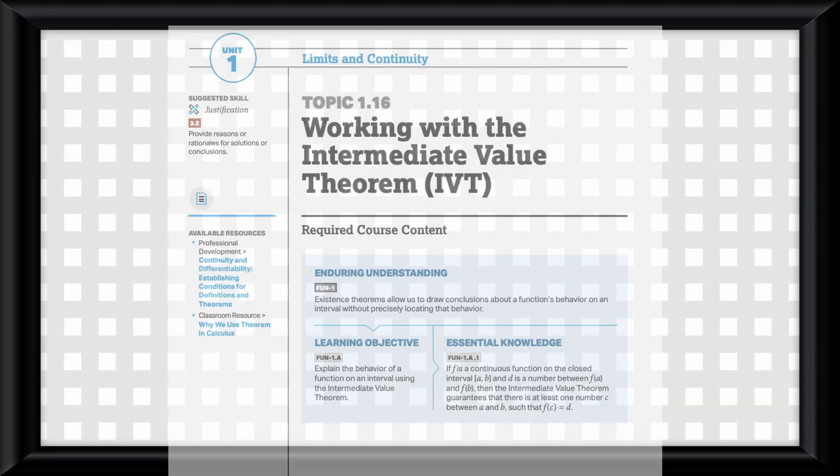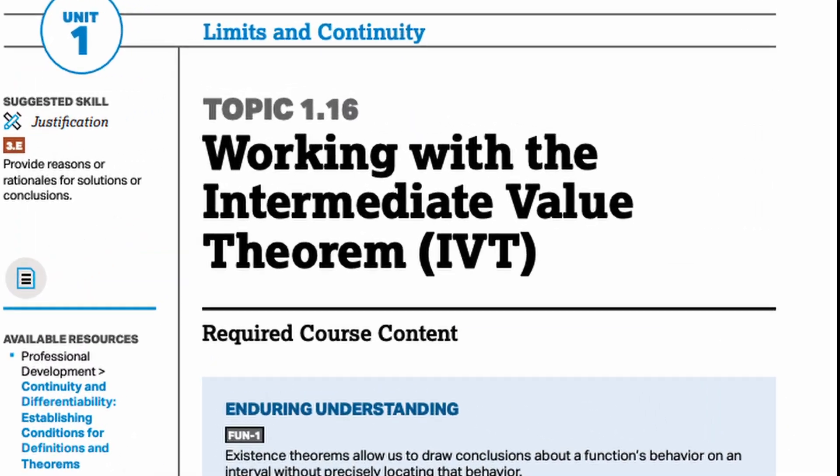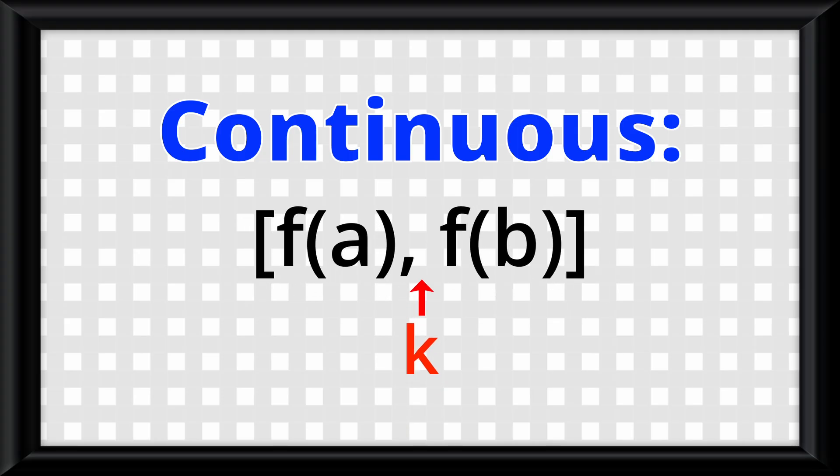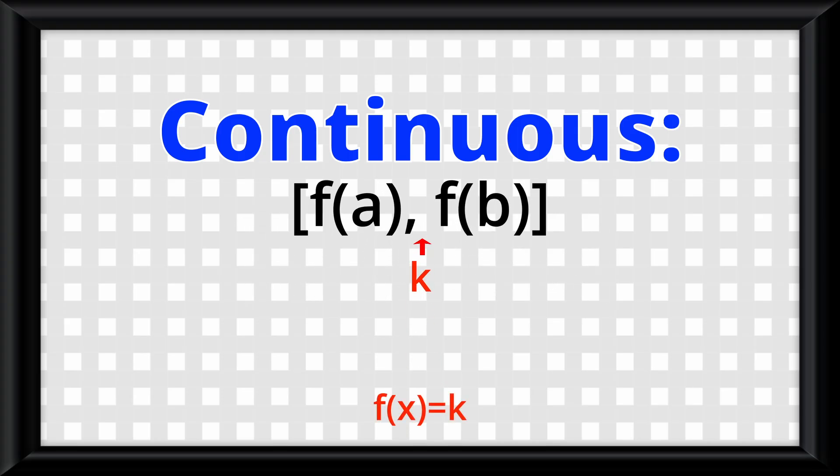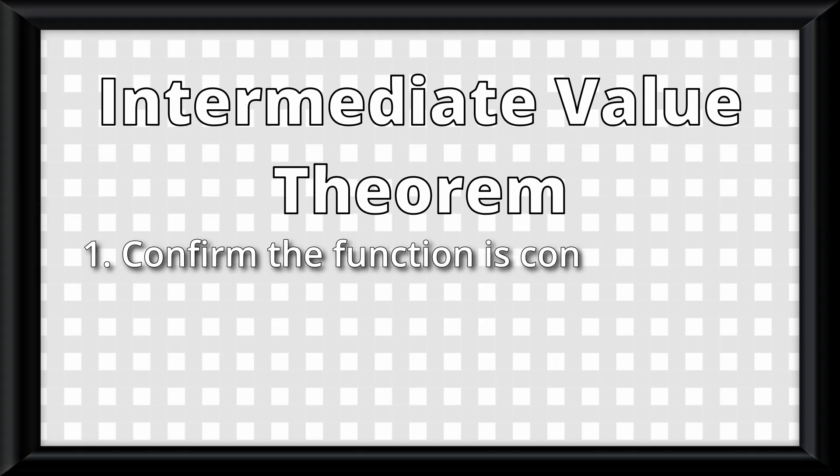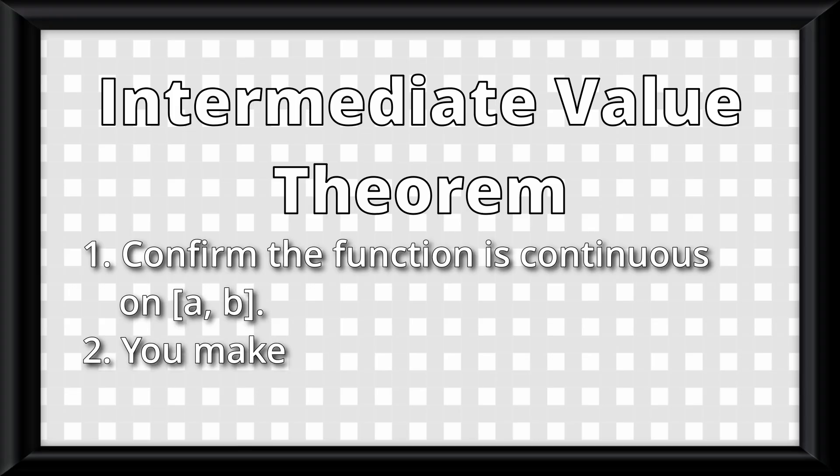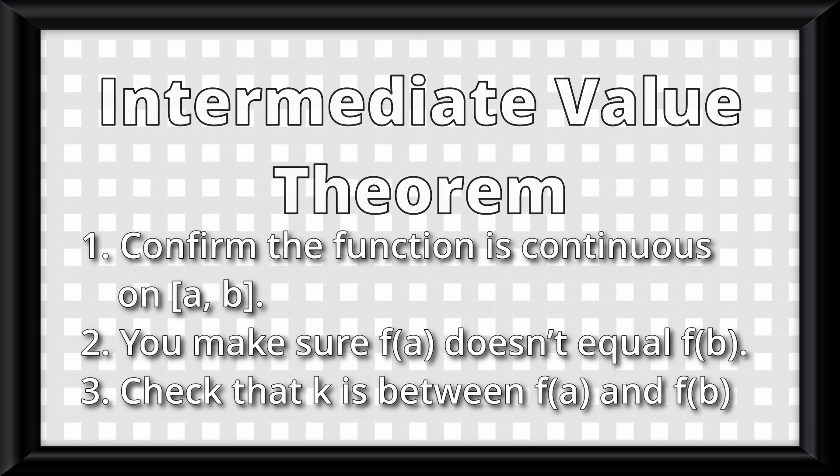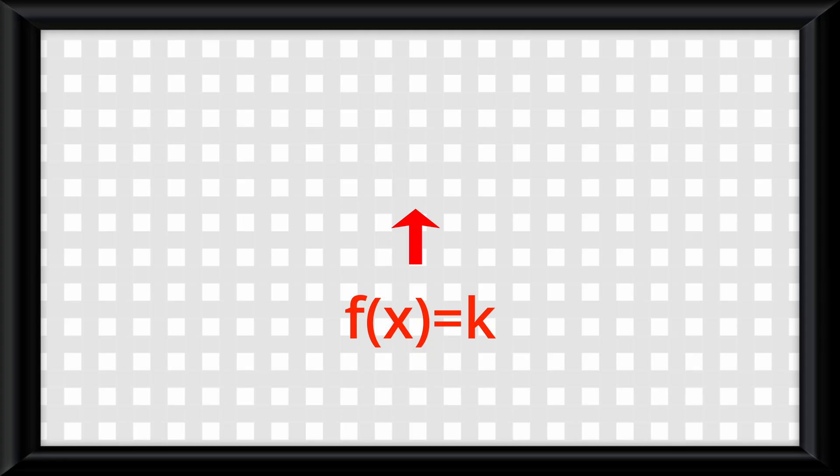And last but not least, I want to introduce you to a theorem you will likely never use, but the CED forces me to teach. If your function is continuous on the interval a to b, and your target number k is between the two endpoint values f of a and f of b, then the function must have the value of k at least once for some x between a and b. This is known as the intermediate value theorem, and it has three parts to use it. Number one, you must confirm the function is continuous on the interval a to b. Number two, you must make sure that f of a doesn't equal f of b. And number three, you must check that k is between f of a and f of b. If all of those are true, then the number k will exist within the interval a to b.